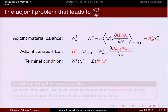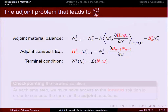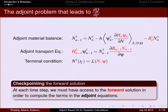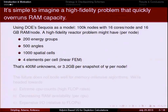This slide introduces the point of the schemes I'm going to talk about today. The adjoint problem that leads to dQ/dp has a specific form: there is an adjoint material balance equation corresponding to the forward material balance equation, an adjoint transport equation corresponding to the forward transport equation, and a terminal condition. It is kicked off at t equals t_f and solved backwards to t equals t_zero. The key thing is that at every time step, when we evaluate terms in the adjoint equation, we need access to the forward solution, since the adjoint equations are linearized about the forward problem.